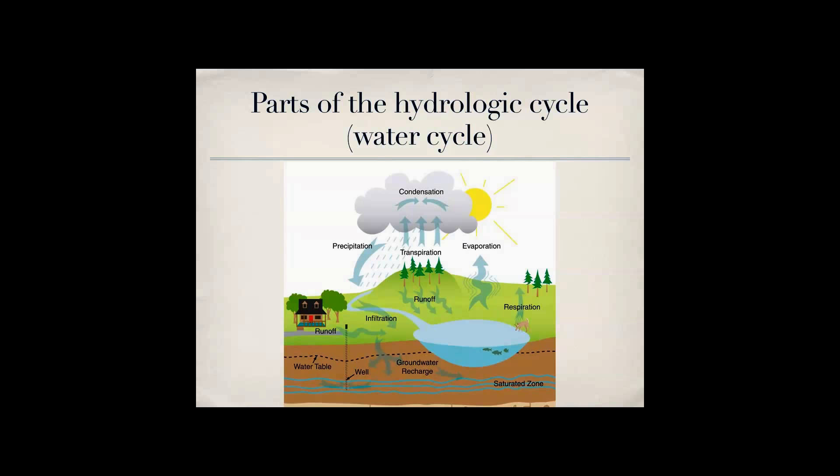And then infiltration is when it goes into the ground, but runoff is when it runs off from a side to go somewhere else. So the water goes to another place from where it originally fell from precipitation. But remember infiltration is when it goes into the ground.